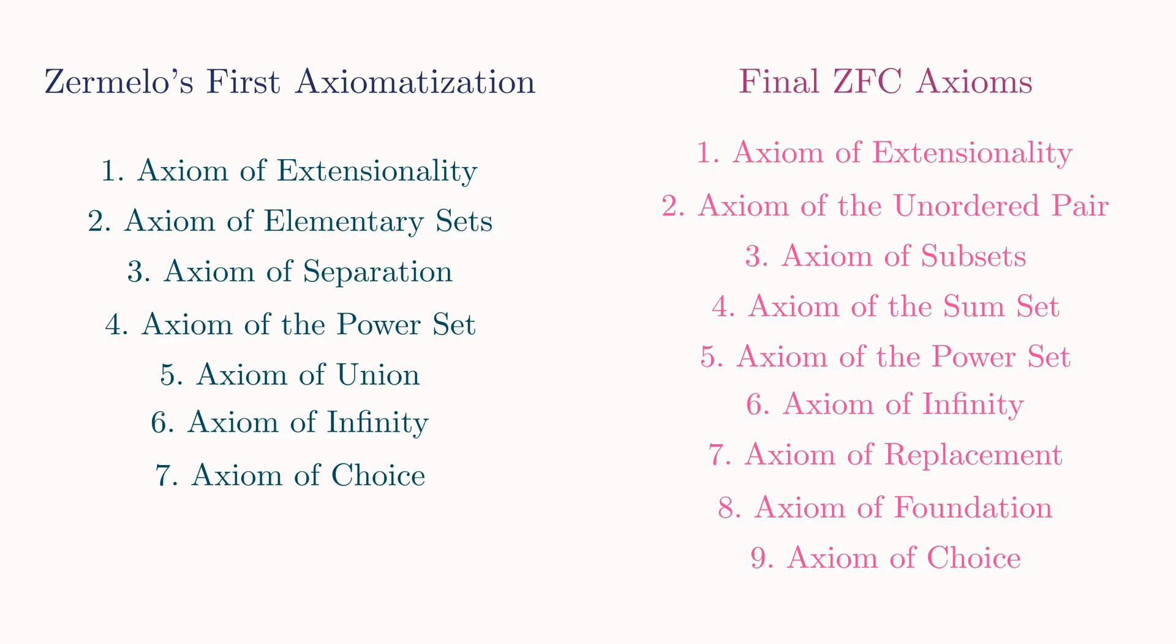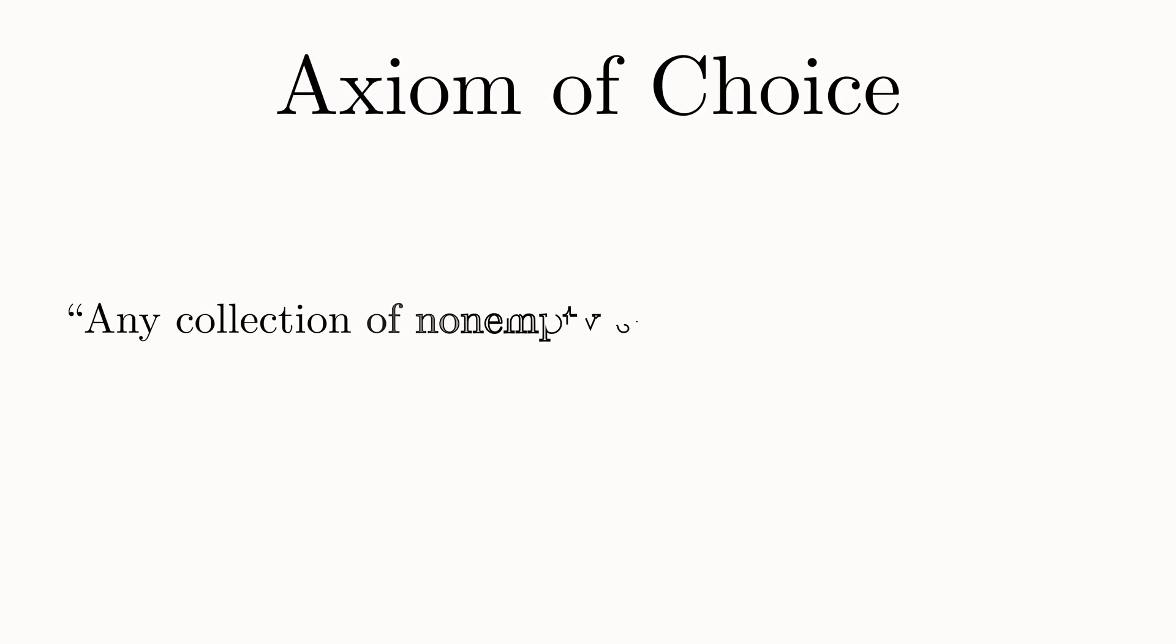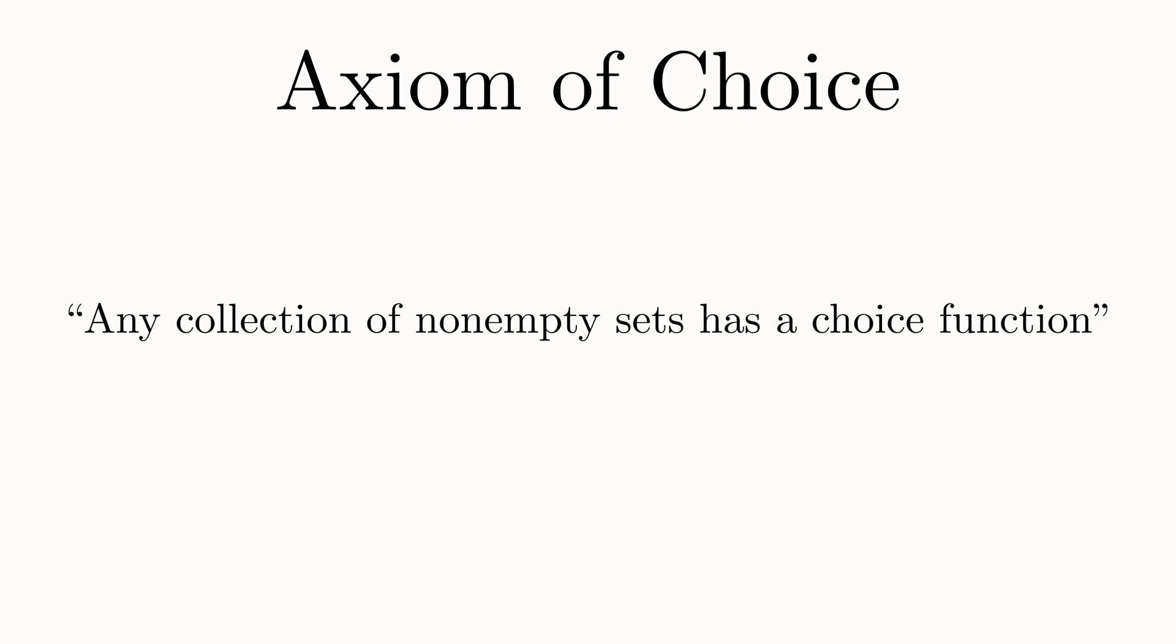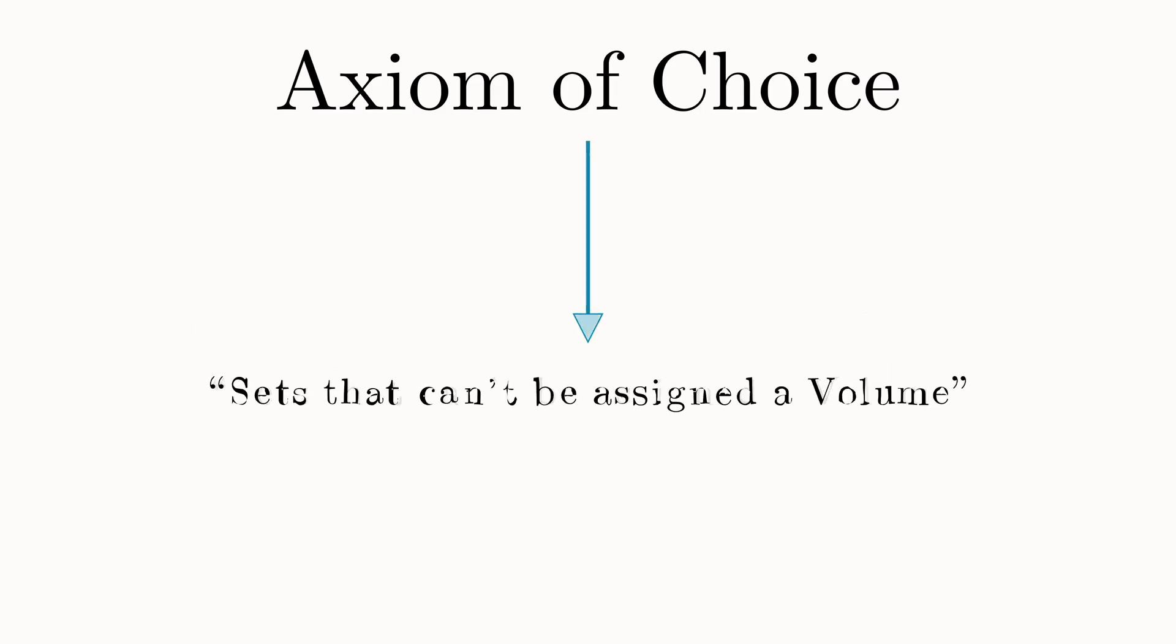So Zermelo was able to show that the well-ordering principle can be proved from these axioms. And specifically what it required was the axiom of choice. This axiom has various equivalent formulations, but the version Zermelo initially used was this one. Any collection of non-empty sets has a choice function. So no matter how small or large the collection is, even if it's countably or uncountably infinite, there is always some way to choose an element from each set. And although this axiom seemed innocent enough, it would turn out to have many surprising consequences.